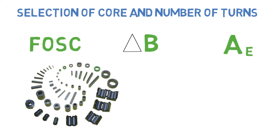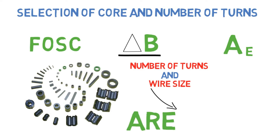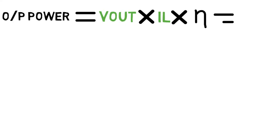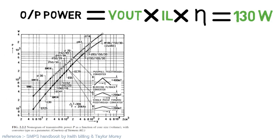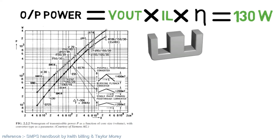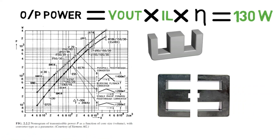The number of turns and wire size is calculated and compared with the effective area of the core. If it is insufficient, a larger sized core is selected and calculations are repeated until the condition is fulfilled. First we need to calculate the output power, which equals output voltage multiplied by output current multiplied by efficiency, which equals 130 watts. Looking at the chart, we can select the core of the transformer. For this type of transformer, we select the E ferrite core because it can withstand high currents and the number of turns to inductance ratio is approximately linear.